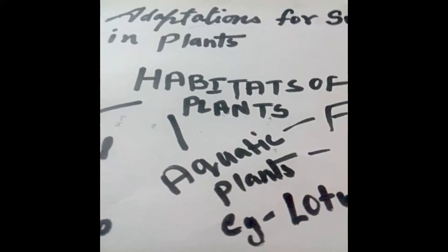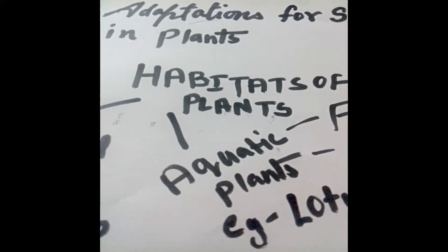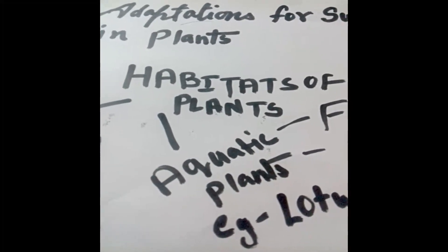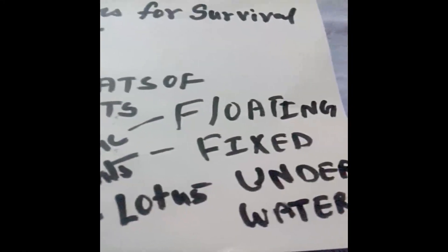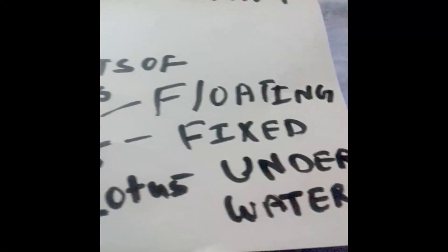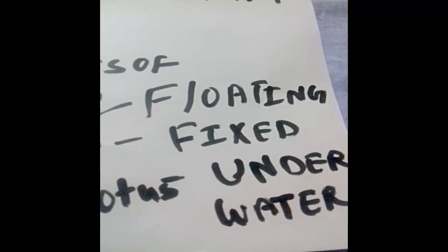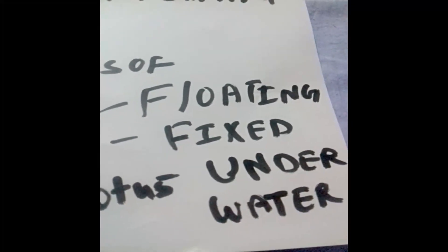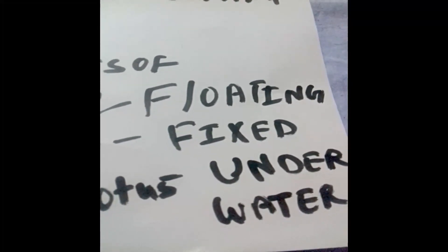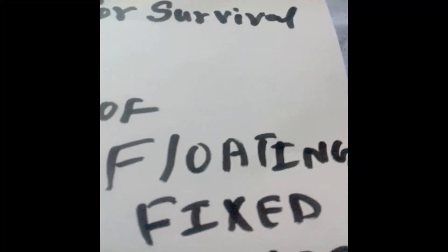These plants can be further distinguished into three types. We will see some more types of aquatic plants: floating plants, fixed plants, and underwater plants. First we will see about the floating plants.